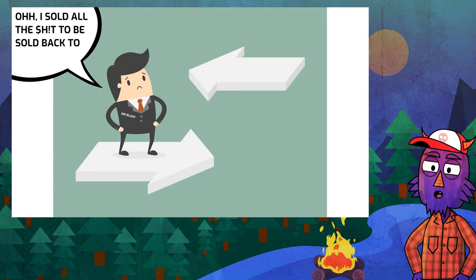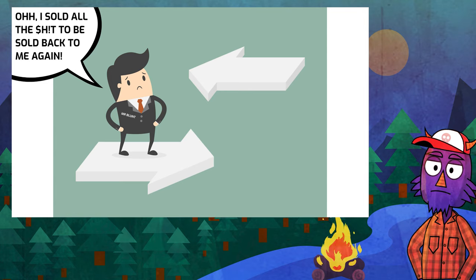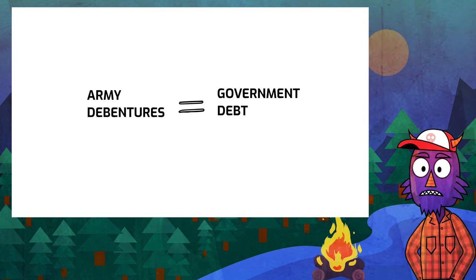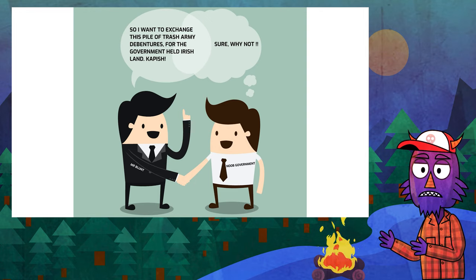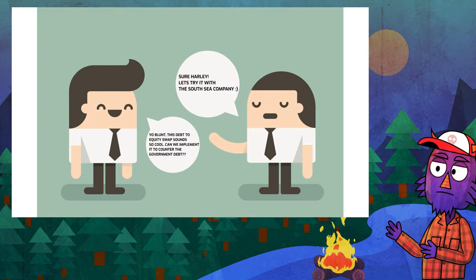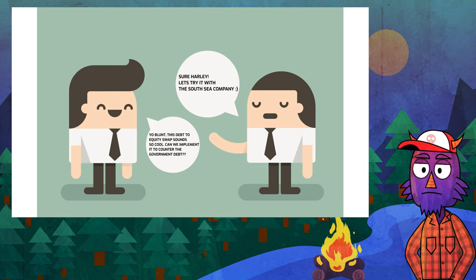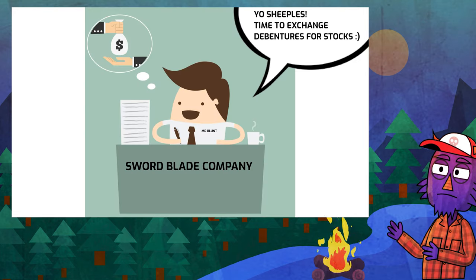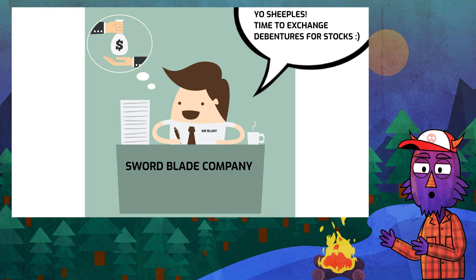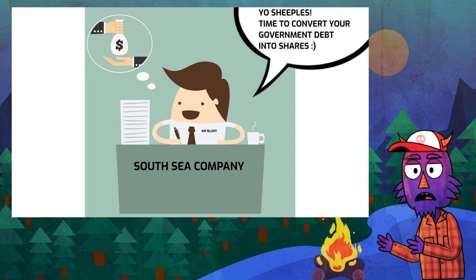But now, you would think that he was sitting on supposedly worthless investments, right? No! You see, army debentures were practically government-backed debt. Blunt promptly exchanged the army debentures for the government-held Irish real estates he was interested in. A similar approach of a debt-equity swap was put into place during the formation of the South Sea Company. Blunt became the chief executive and head governor of the South Sea Company. The idea was to allow anyone holding government debt, which had risen to a staggering 30 million pounds by now, to convert it into shares in the company.